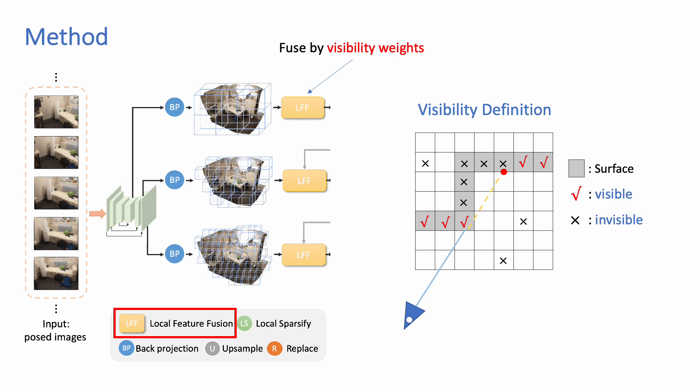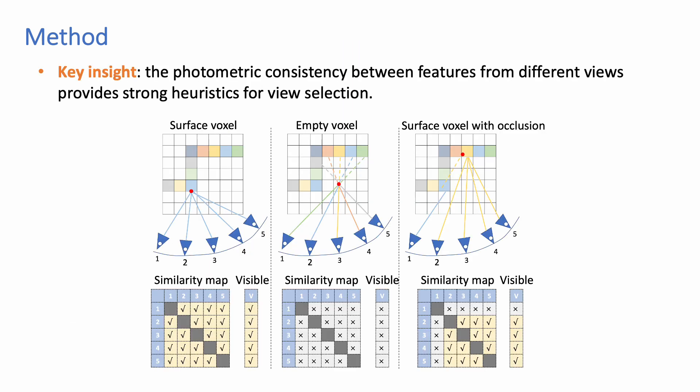We define a voxel to be visible to a camera view if it is on object surface and not occluded.